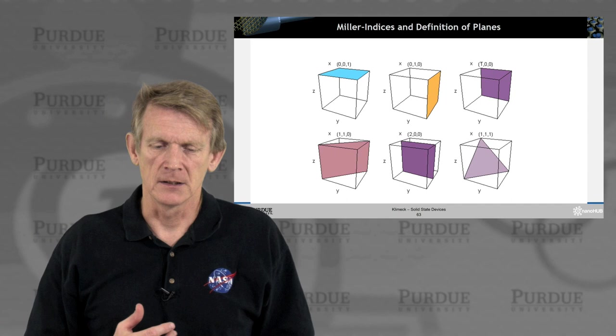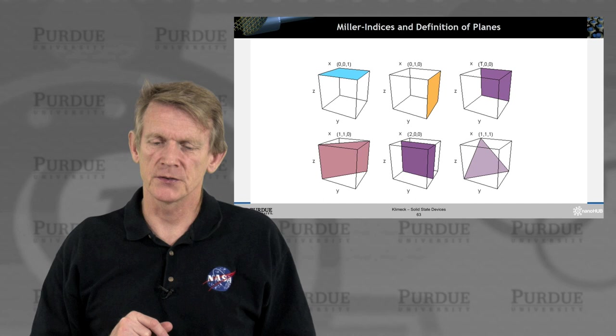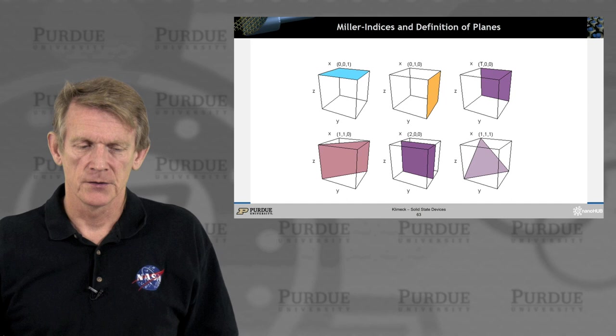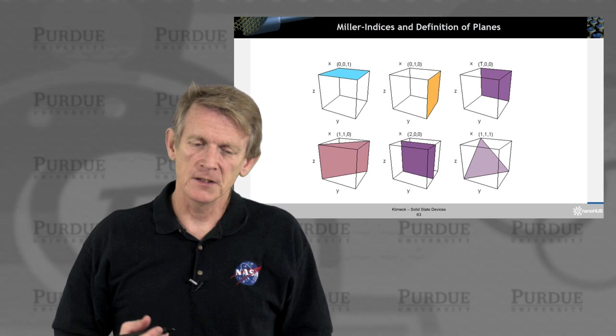And so you have a top surface and we would declare this 0, 0, 1 surface. And you might have a surface that's orthogonal to y. We call that 0, 1, 0 surface. And there's a surface orthogonal to, say, x. And that could be a minus 1, 0, 0 surface. So we can have these simple surfaces throughout the cube.